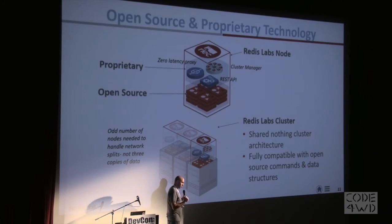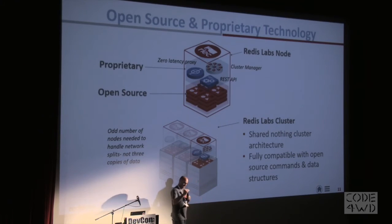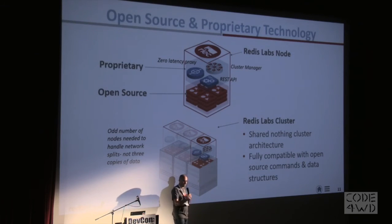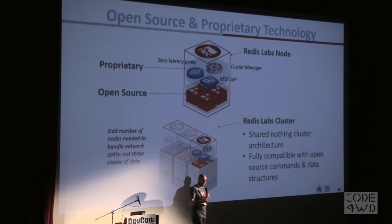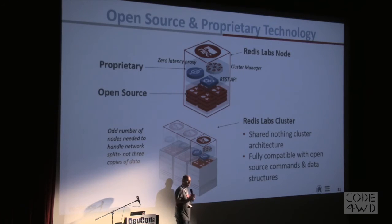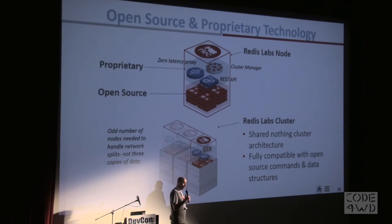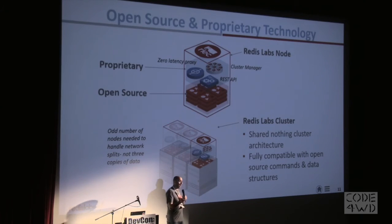This is where our technology comes in: we can cluster the database in an almost seamless way to the application. In most cases, customers don't need to change anything in their application to use our cluster. At the lower level we still run open source Redis, but we have multiple instances — each an independent Redis process. On top of that we have layers of Redis Labs technology: a proxy-like API that knows which Redis instance holds which data, implementing the sharding. We use a regular expression to decide which shard each key goes to, and it's a shared-nothing policy — one key can only reside on a single Redis process.